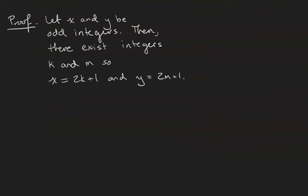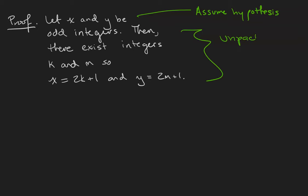For the forward direction, our hypothesis is we let x and y be two odd integers, then we unpack the definitions. If x and y are both odd, there exist integers k and m — notice I have to use different letters because they're not necessarily the same integer — such that x equals 2k plus 1, which is the definition of odd, and y equals 2m plus 1.